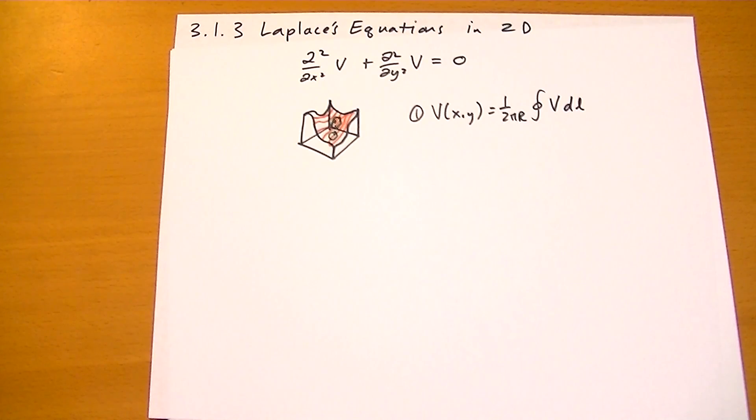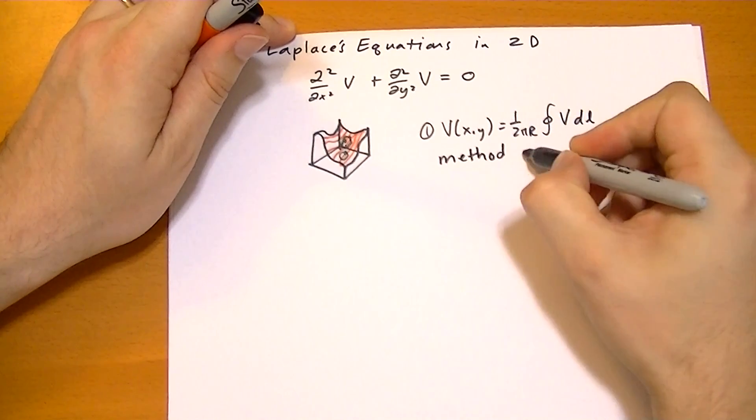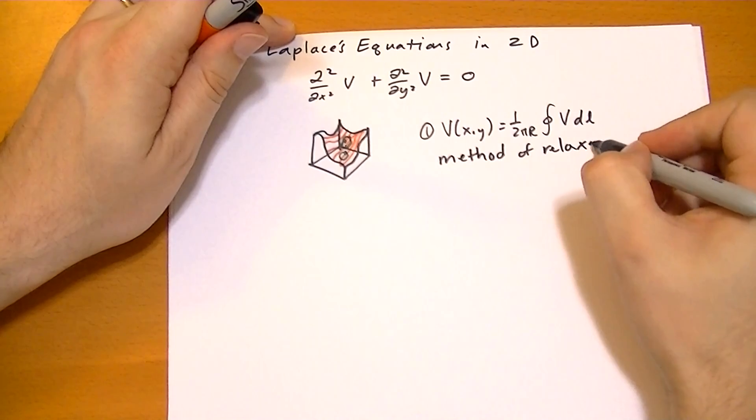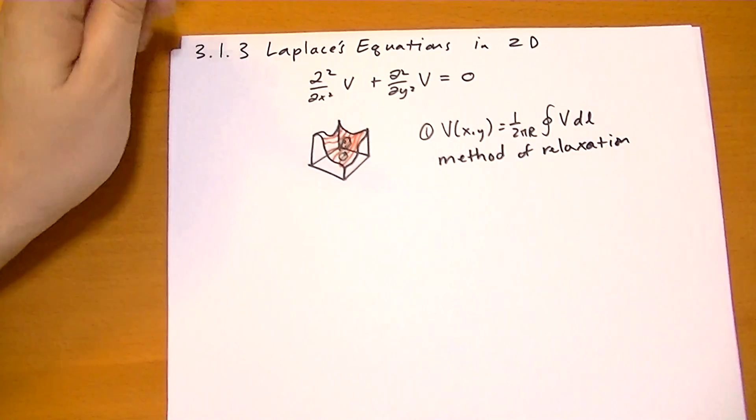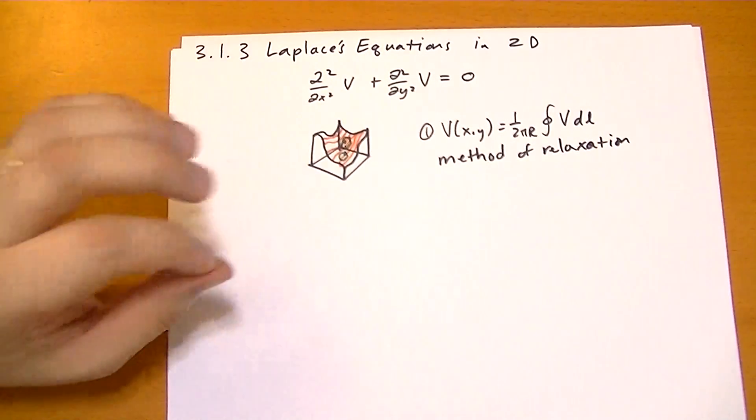And this leads to something called the method of relaxation, which is pretty useful for computers to solve equations like these. The way this works—it's a simple algorithm, relaxation—is that you start off with an assumption of what the values are, it doesn't have to be very good, and then you just start averaging.